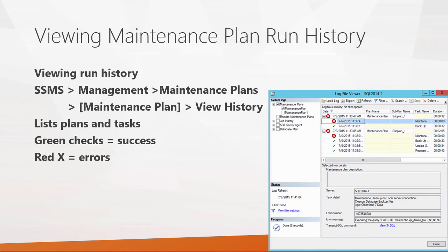Once you've created or updated a task, you can view your maintenance plan run history by going to SQL Server Management Studio, expanding the management maintenance plans node, right-clicking the maintenance plan, and selecting View History — which opens the Log Viewer. The Log Viewer lists the different plans that ran, with a red X indicating an error or failure and green checkmarks showing successes. By expanding each plan, you can see all the tasks underneath and identify which ones succeeded or failed.